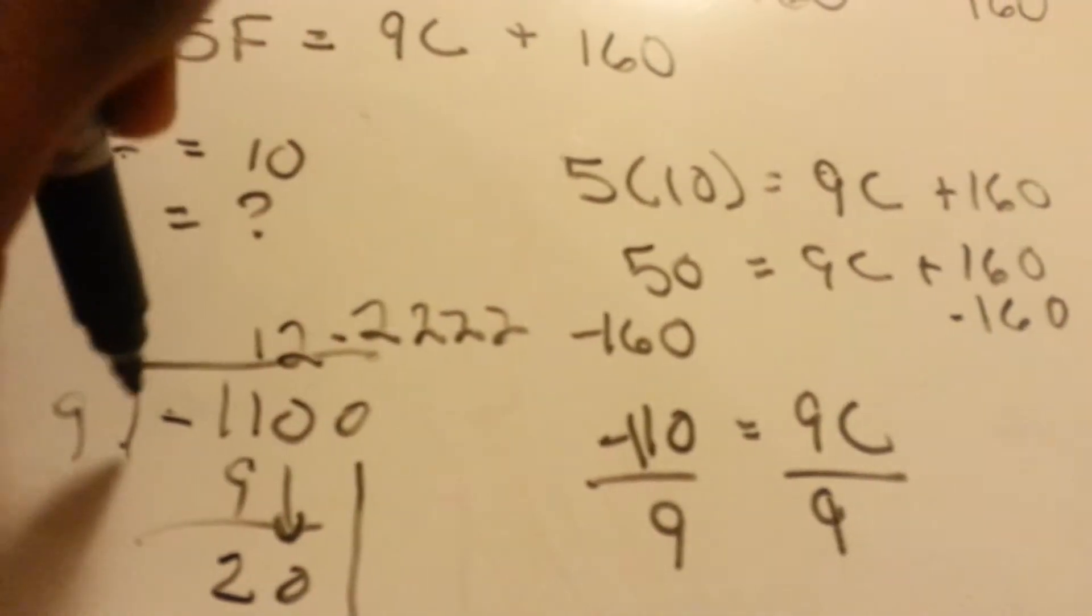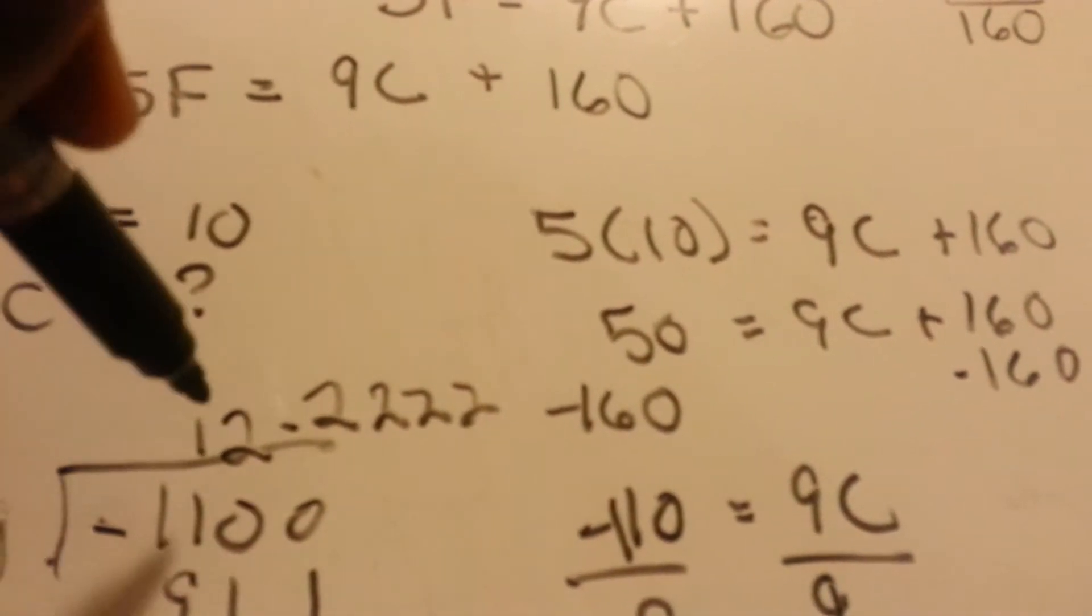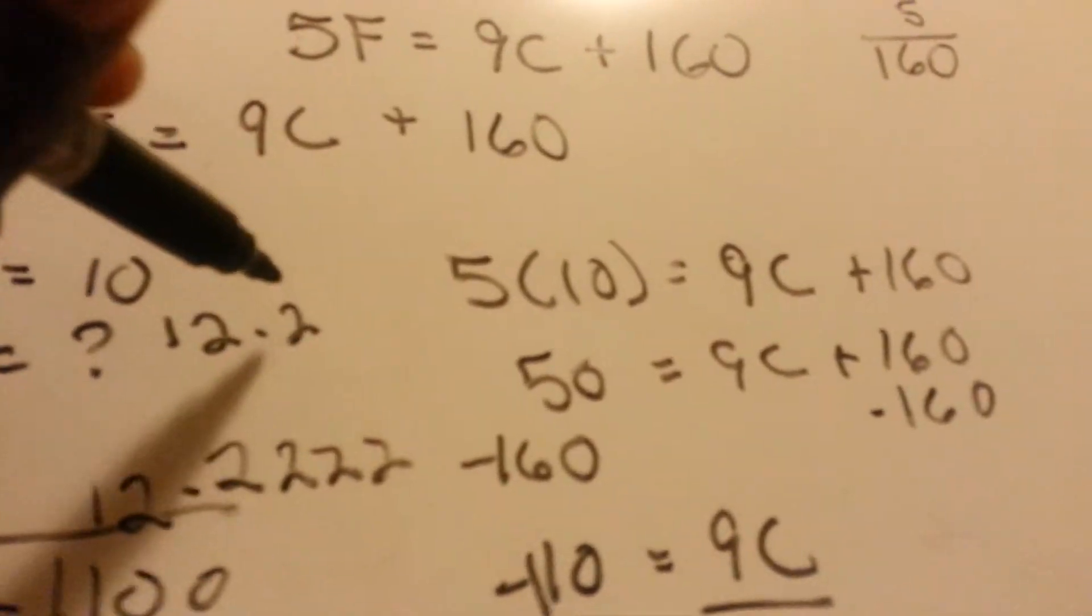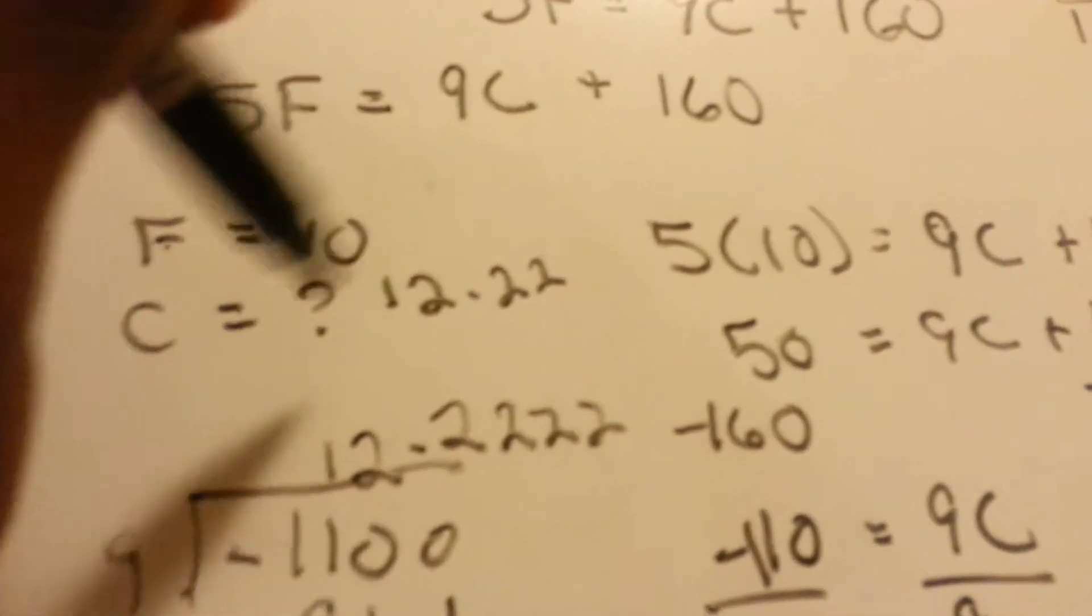It would be 2, 2, 2 repeating. So 10 degrees Fahrenheit equals negative 12.22 repeating degrees Celsius.